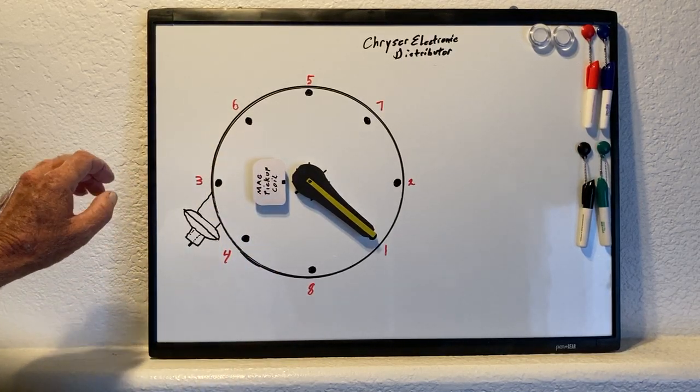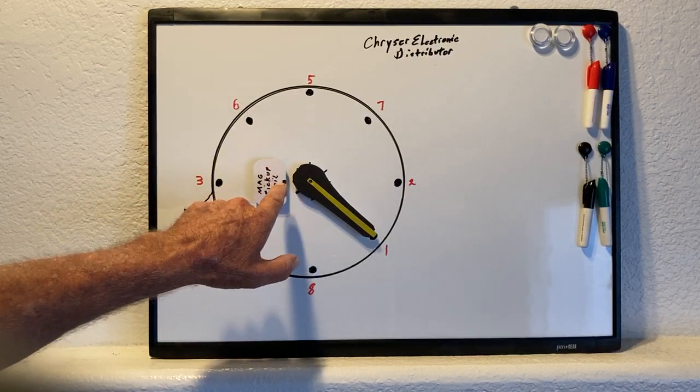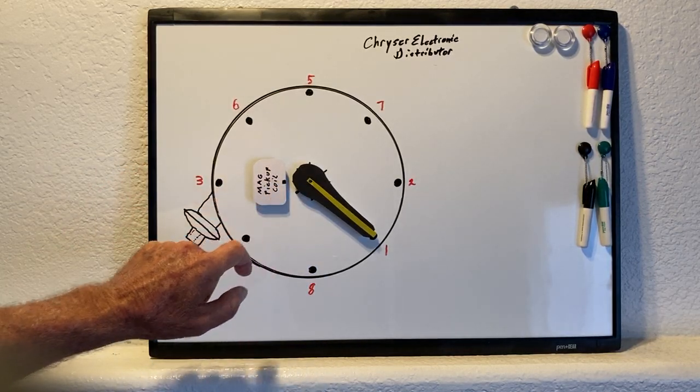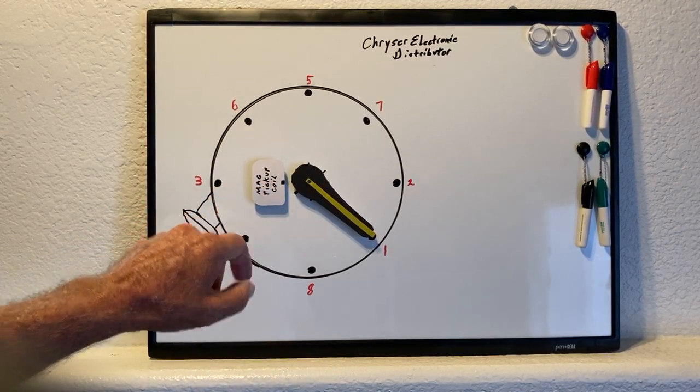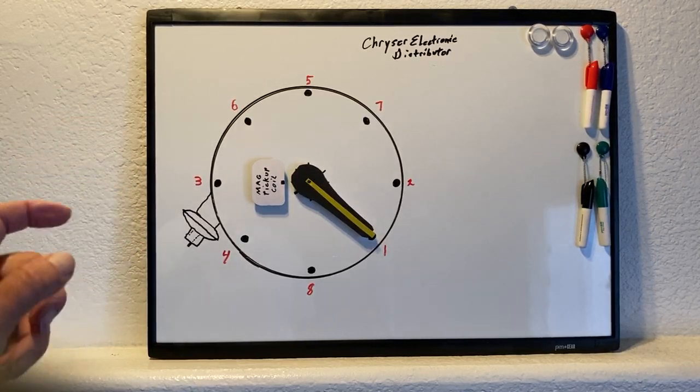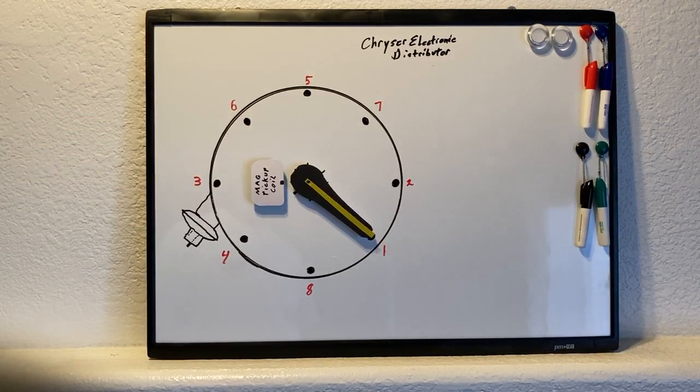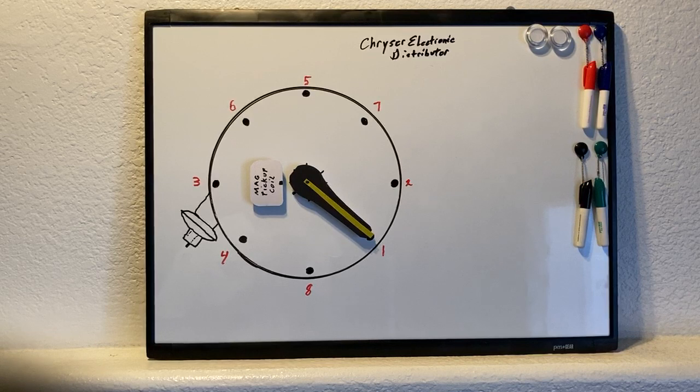When these little vanes pass that point on the pickup coil, it sends about a one volt AC pulse through those wires to your ignition module, and that's what makes your coil fire. So what we're going to talk about is rotor phasing. This is something that a lot of people don't realize what it is or how it affects anything.